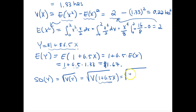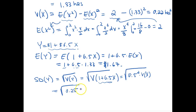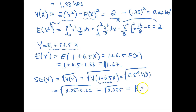Taking the variance, we bring out 0.5 squared and multiply by the variance of x. So the standard deviation of y equals the square root of 0.25 times 0.22, which is the square root of 0.055, equal to 0.23 dollars — or 23 cents. On average, the fee will vary by 23 cents. Hopefully this helped you understand how to use linear combinations to find expectations and variances.